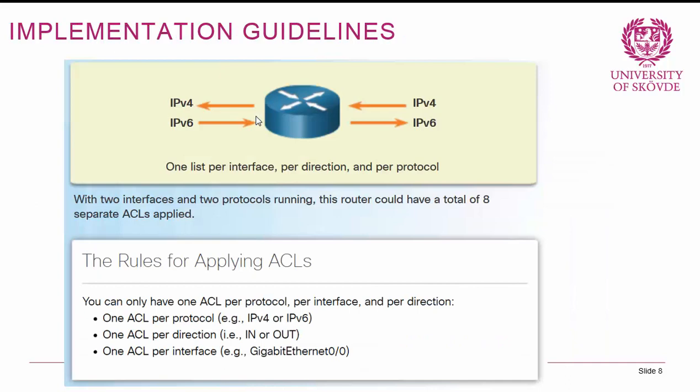Let's dig into some implementation guidelines. We can have one list per interface, per direction (inbound or outbound), and per protocol (either IPv4 or IPv6). So with two interfaces and two protocols, a router could have a total of eight separate ACLs applied.